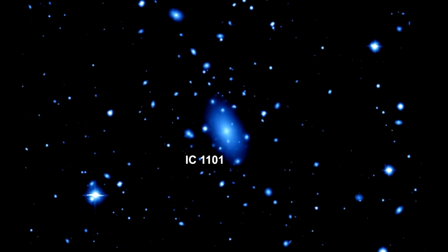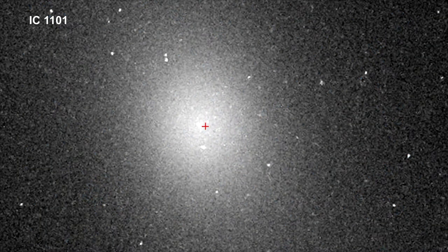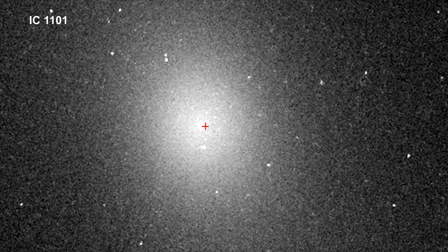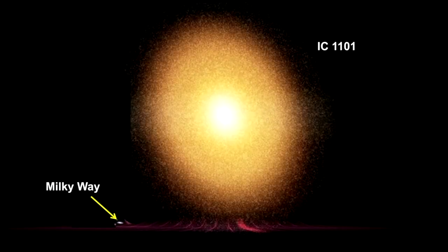The large elliptical galaxy visible in the center of the image is IC 1101. It is the largest galaxy ever seen. It is 6 million light-years across, 60 times larger than our Milky Way, and it contains around 100 trillion stars.